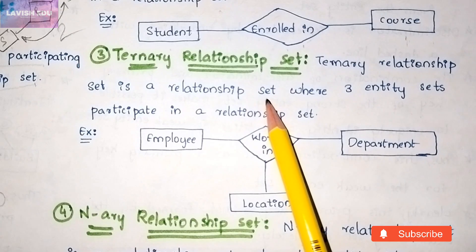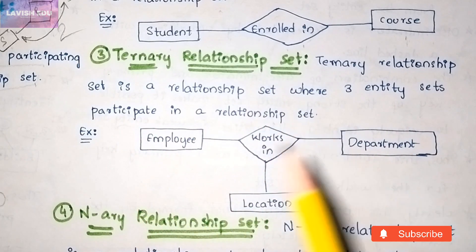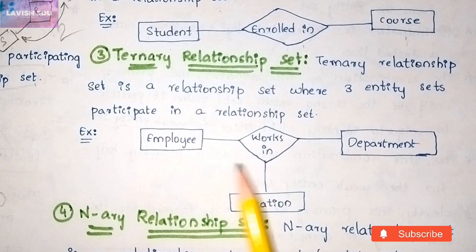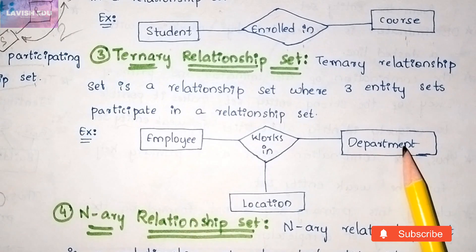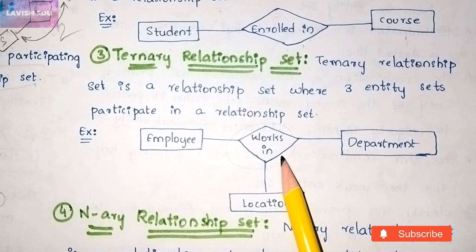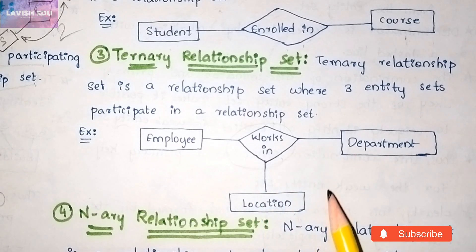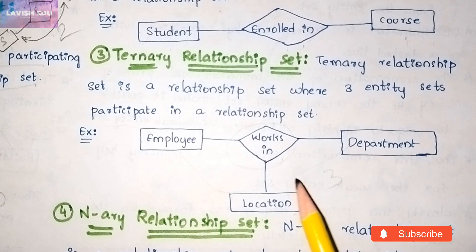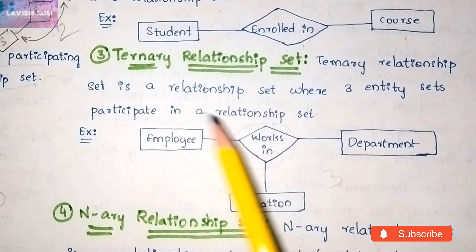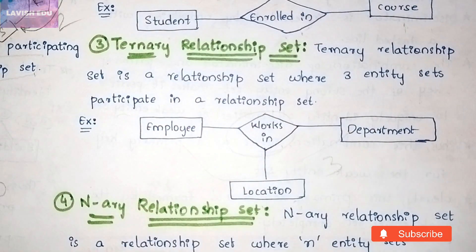A ternary relationship set is one where three entity sets participate in a relationship set. Here, 'working' is the relationship, and employee, department, and location are the entities. Since three entities are participating in the relationship set, this is termed a ternary relationship set.